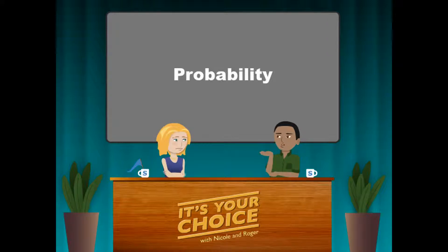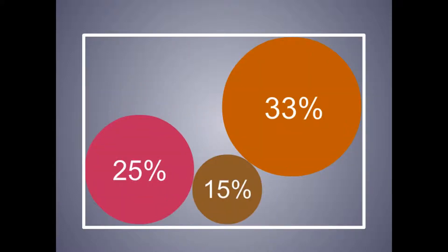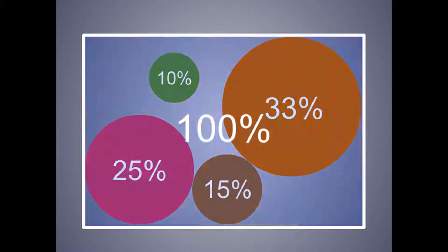Before we dig in, I think we should cover some basic rules of probability. Rule number one: any alternative could have a number of possible outcomes. Some of those outcomes may be more likely than others. So the probability of any given outcome must be between 0 and 100 percent, and the sum of all possible outcomes for a given alternative must add up to 100 percent.